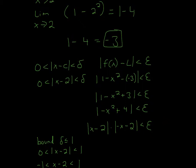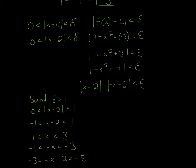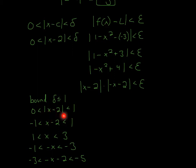Now what you're going to do is make this equal to delta, since you're trying to find delta. So the first step is to get rid of the absolute value. How you're going to do that is bound delta less than 1. You can bound delta to whatever number you want — 1 is very convenient, so I'm going to use 1. So now I have 0 < |x minus 2| < 1, which I rewrite as negative 1 < x minus 2 < 1. These two are exactly the same.